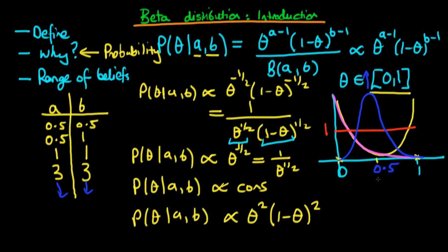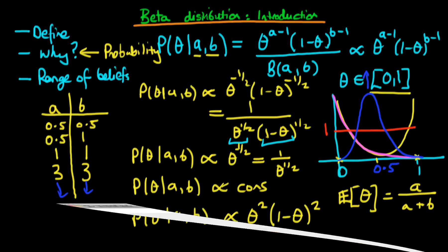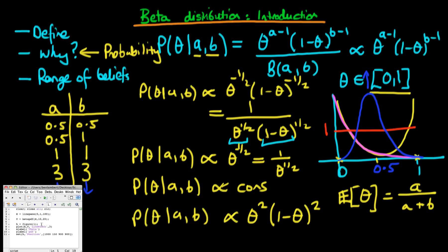You don't necessarily have to increase both a and b equally. The mean of the beta distribution — the expected value of theta — turns out to be a over a plus b. So if you increase a without increasing b, the distribution will be slanted more and more towards the value of 1. I've coded up this beta distribution in MATLAB and will now show you some simulations.